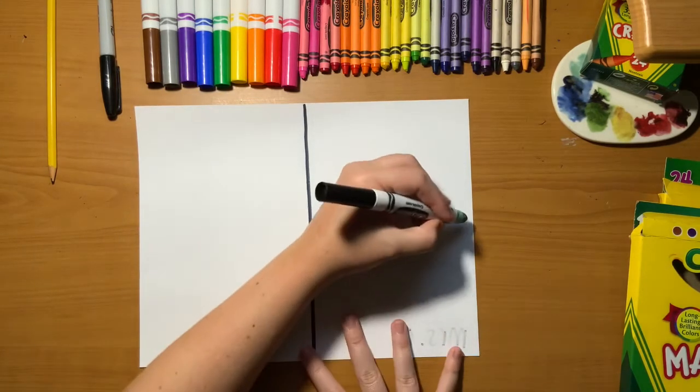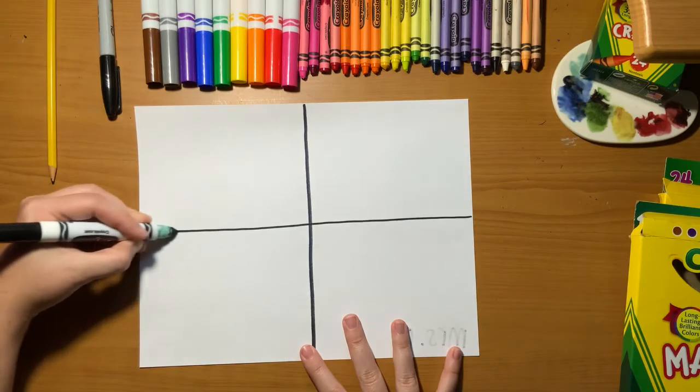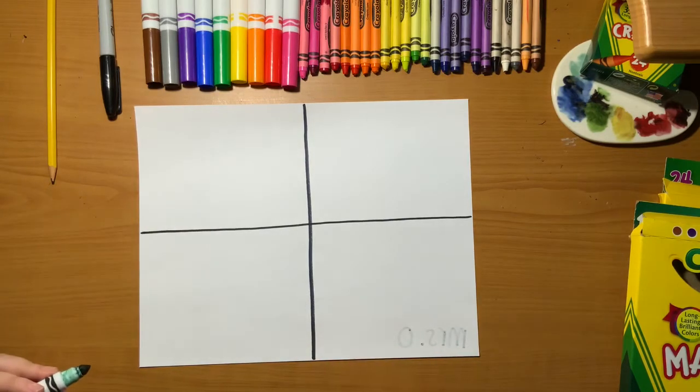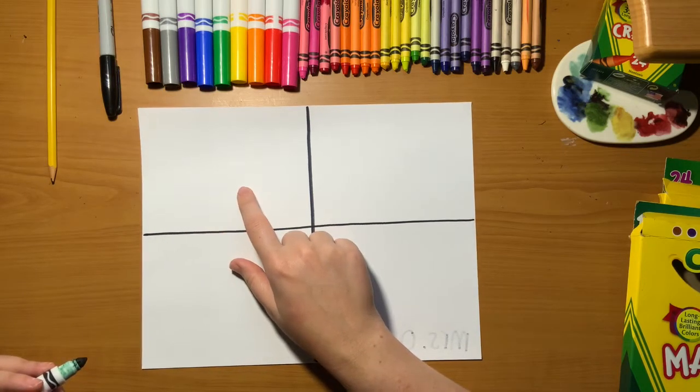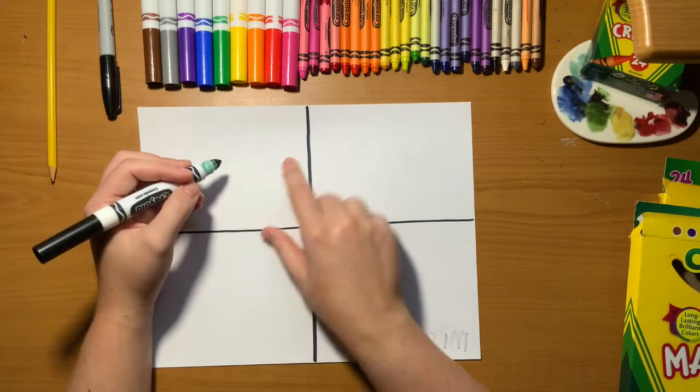Then you're going to do a horizontal line straight through the middle again, so you should look like a big plus reaching the edges of your paper. Choose any box to start in. We're going to start with a donut.